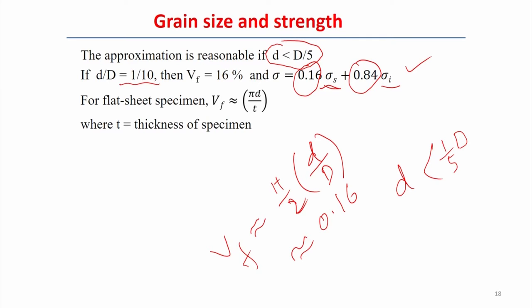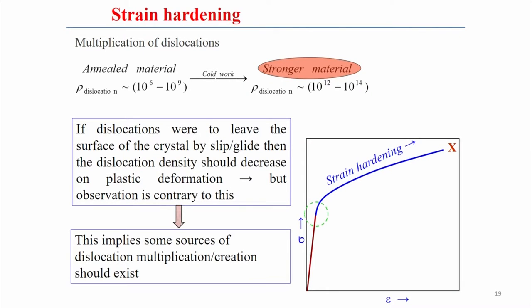The Hall-Petch equation is used to relate flow stress to average grain size, and similarly hardness can be related to average grain size following a similar relation. Now we focus on the strain hardening mechanism. The basic mechanism for strain hardening is that during deformation there is an increment of dislocation density — dislocation generation increases with deformation, and that increment of dislocation density imparts strength. Dislocation density in annealed material is in the range of 10^6 to 10^9 per m².